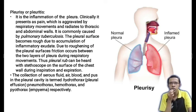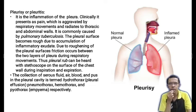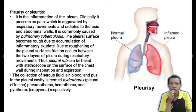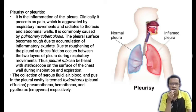Pleurisy or pleuritis is the inflammation of the pleura. Clinically it presents as pain aggravated by respiratory movements, radiating to the thoracic and abdominal walls. It is commonly caused by pulmonary TB. The pleural surface becomes thickened and rough due to accumulation of inflammatory exudate, and due to roughening of the pleural surface, friction occurs between the two layers of pleura during respiratory movements — thus a pleural rub can be heard with a stethoscope during inspiration and expiration. The collection of serous fluid, air, blood, and pus in the pleural cavity is termed hydrothorax, pneumothorax, hemothorax, and pyothorax or empyema respectively.